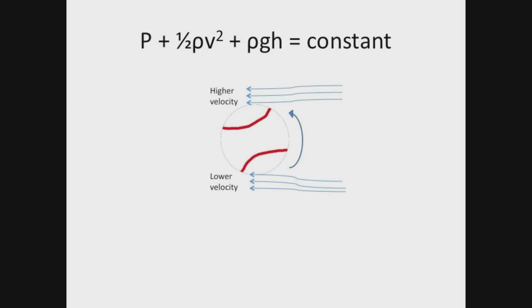Now that we've established that, we can determine what happens to the pressure in these two spots. As one goes up the other goes down, so that gives us lower pressure on top of the ball and higher pressure on the bottom. Pressure always goes from high to low, which results in a force towards the top of the ball. From the point of view of the righty pitcher, the ball breaks to the left — and this is why.